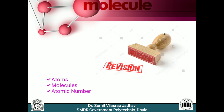The next point we have to revise is atomic number. Atomic number is nothing but the number of protons present inside the nucleus of an atom, or we can say that the number of protons is equal to the number of electrons revolving around the nucleus of an atom. Electronic configuration is the systematic arrangement of electrons in certain shells present around the nucleus of an atom. These shells are called energy shells or stationary states.